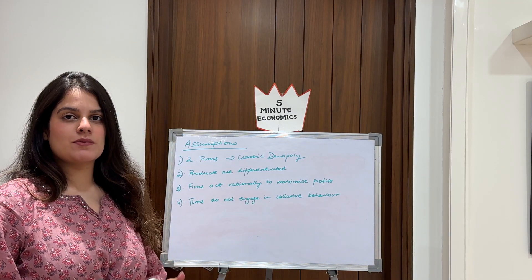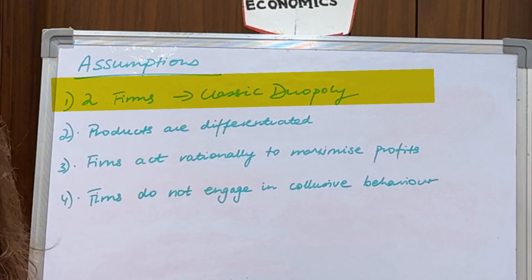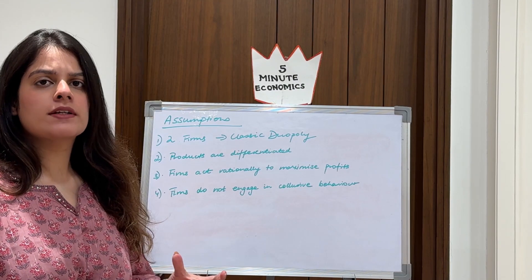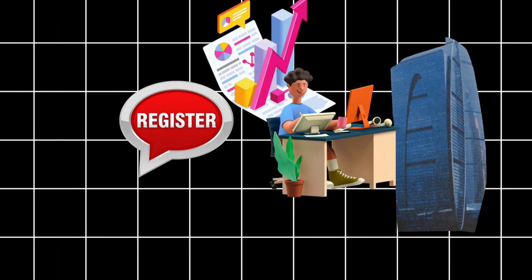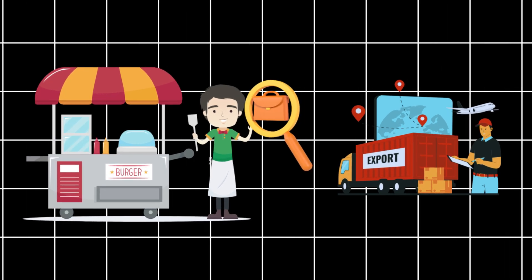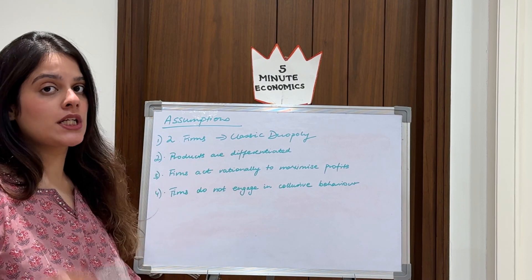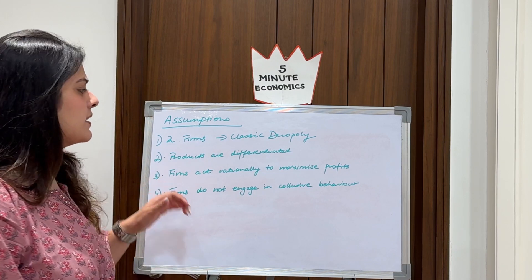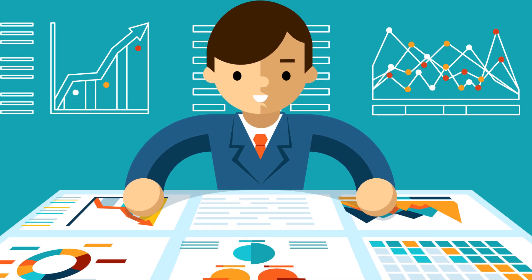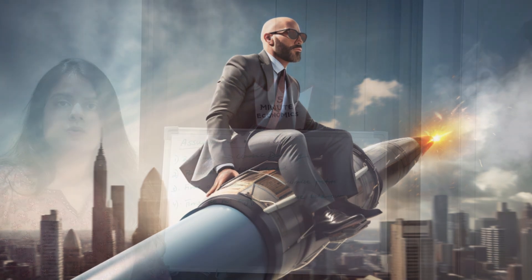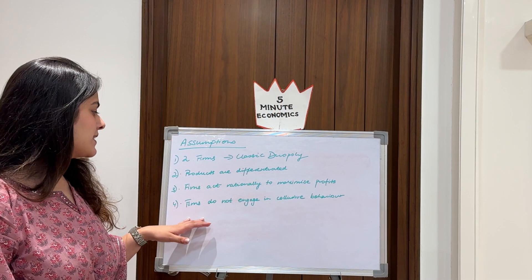Let us quickly run through the assumptions of this model. Number one, there are two firms - of course it is a duopoly model. Secondly, products are differentiated and not homogeneous. Thirdly, firms are rational and they want to maximize their own profits. And lastly, firms do not engage in any type of collusive behavior.